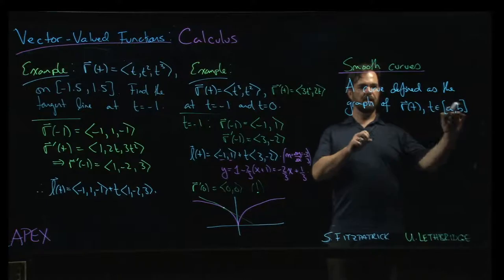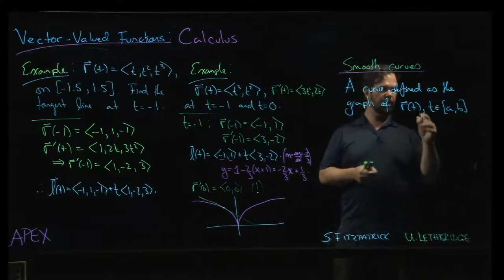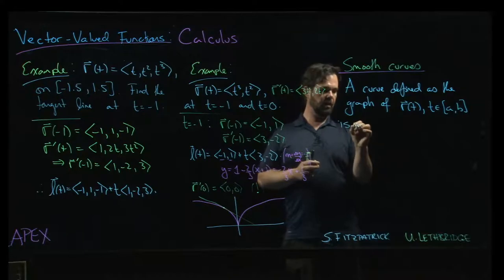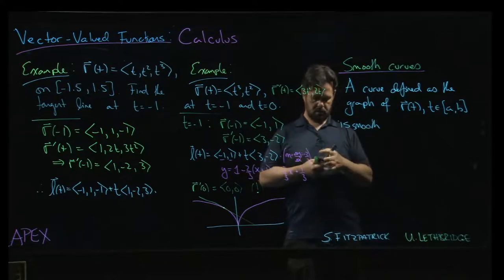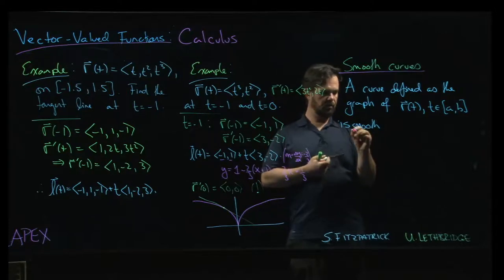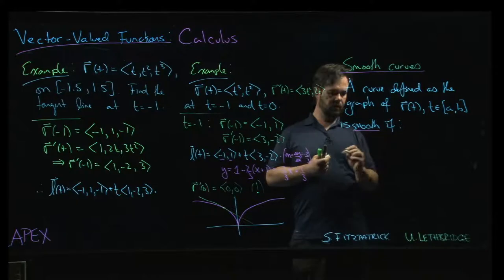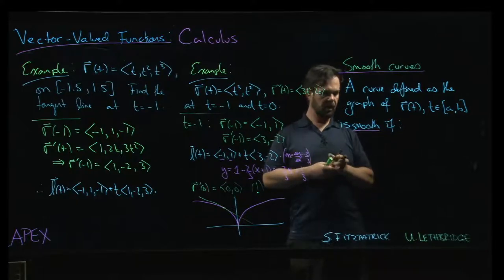So what does it mean to say that a curve defined as the graph of some vector-valued function on an interval? What does it mean to say that it's smooth? So let's underline smooth, that's our important word here. It's smooth if, well, two things have to happen.